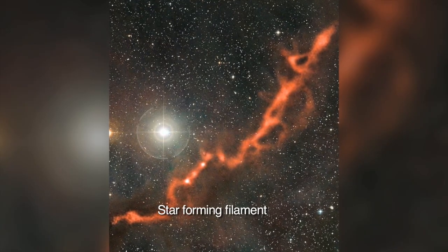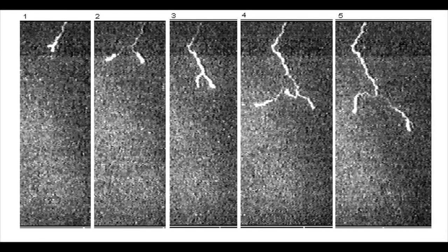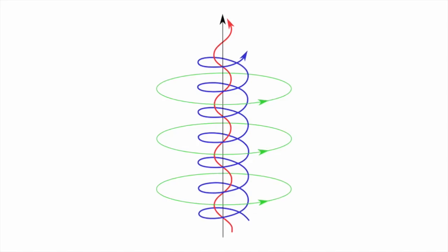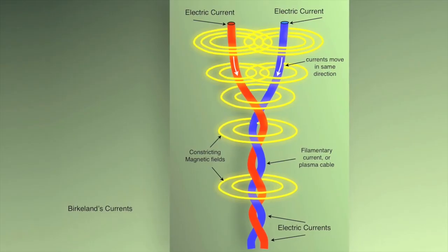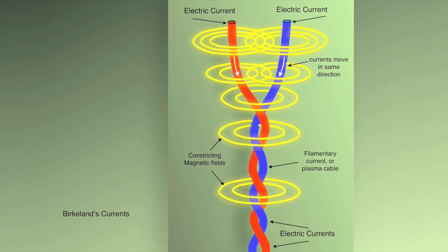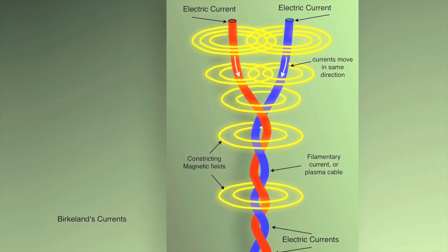In images from space, as well as in high-speed photographs of plasma activity in the laboratory, those currents form twisted pairs of filaments called Birkeland currents. Birkeland currents follow magnetic fields and draw charged material from their surroundings.